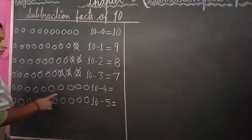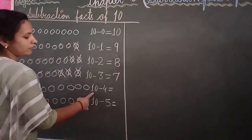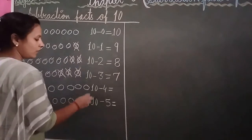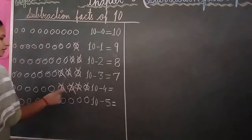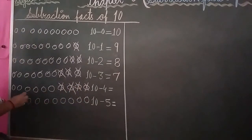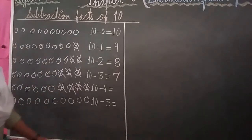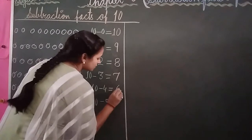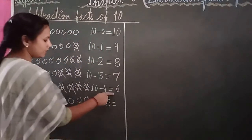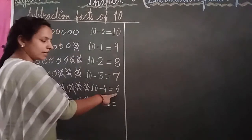Again draw your 10 balls. Write: 10 minus 4. Cut and cross out 4 balls: 1, 2, 3, 4. Count the balls left: 1, 2, 3, 4, 5, 6. How many balls are left? 6. Write your number: 6. The answer is 6. 10 minus 4 equal to 6.